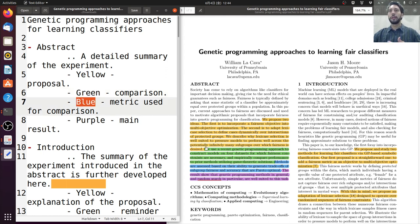In the blue part, they talk about what are the metrics, how do they do that. The methods are assessed based on their ability to generate trade-offs of subgroup fairness and accuracy. And they operate the optimum.